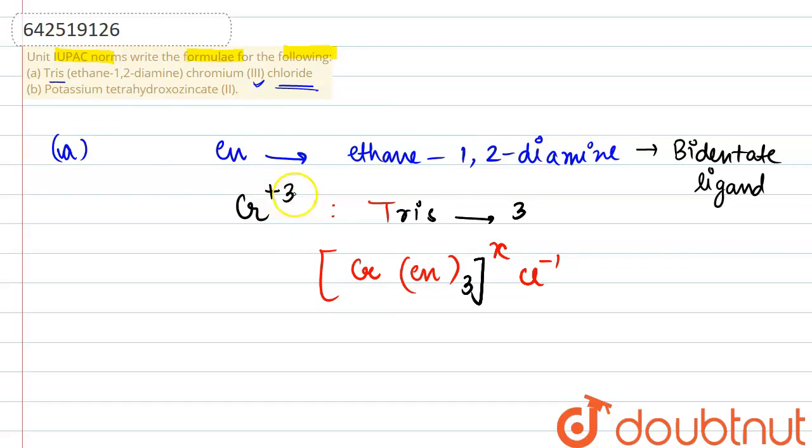Since chromium is given that it has a plus 3 oxidation state, it will carry a charge plus 3. We know EN, that is ethane-1,2-diamine is a neutral ligand. So, 0 charge would be coming from here. That will be equal to X. From here, X comes out to be plus 3.